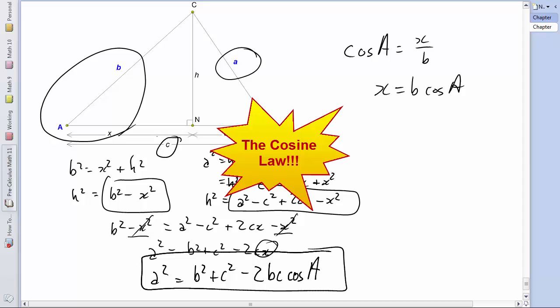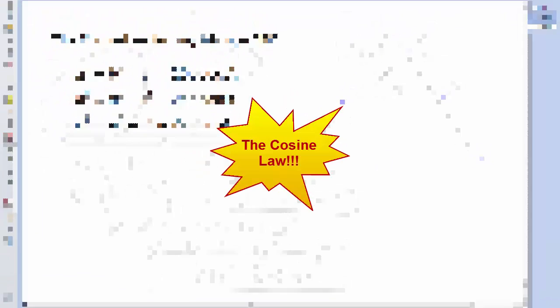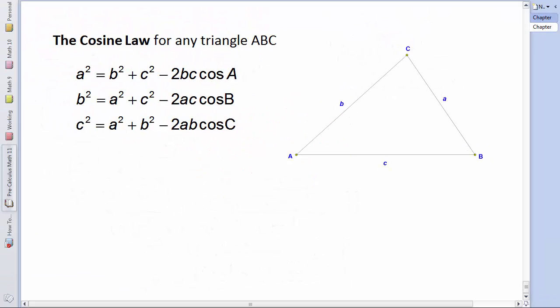And this is the cosine law for any triangle ABC. A squared equals B squared plus C squared minus 2BC times the cosine of A. Now, since the naming is really arbitrary, and maybe it's not angle A that we're given, you could manipulate the variables around here and also say B squared equals A squared plus C squared minus 2AC cosine B, or C squared equals A squared plus B squared minus 2AB cos C.